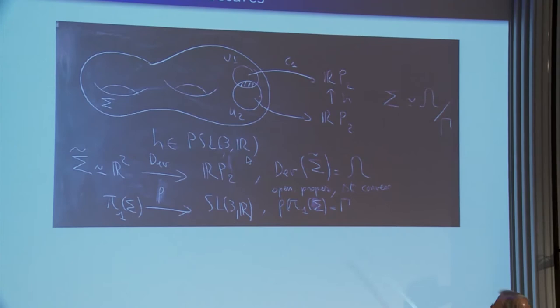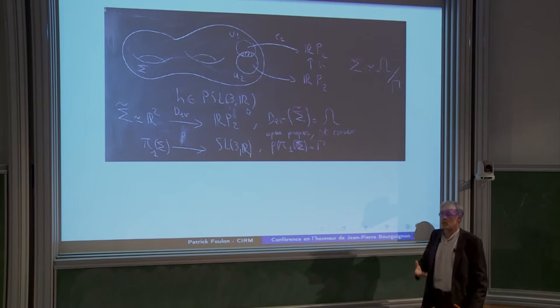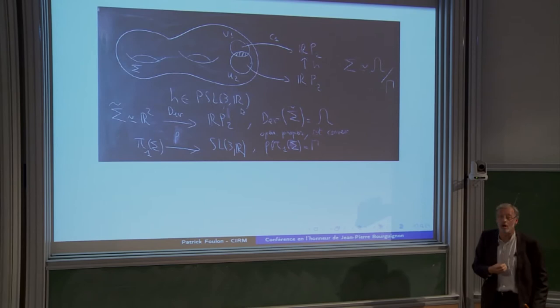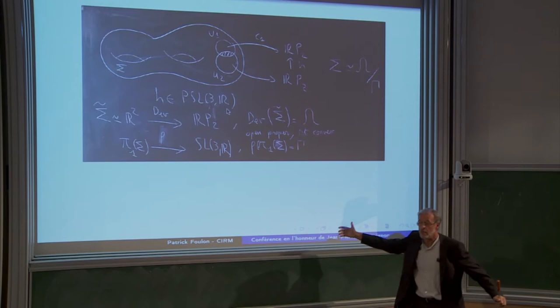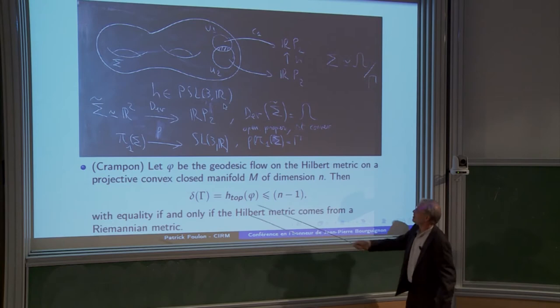And the idea is that you have a group. Can you say something about this group? For instance, can you say something about the critical exponent of the group? The critical exponent is the exponent which is linked to the Poincaré series. The Poincaré series diverges if you take something smaller than that. It counts the growth of the group. It counts also the number of closed geodesics, shorter than a certain number.